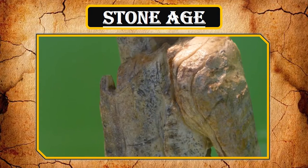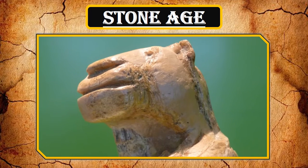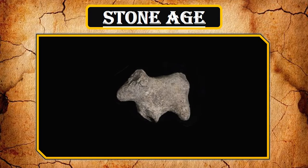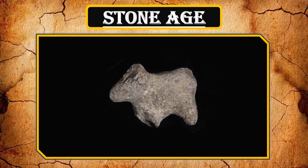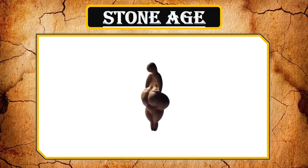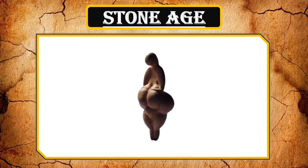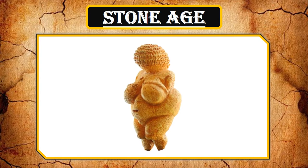These figurines depicted humans gaining control over natural elements, nature herself, and animals. Fertility was another popular Stone Age theme, probably because it represented prosperity and expansion of the tribe. Stone Age figurines of pregnant women known as Venuses are common in Stone Age art.